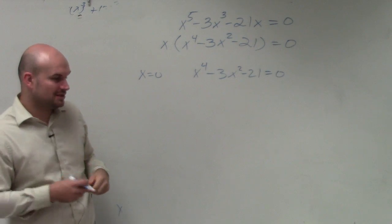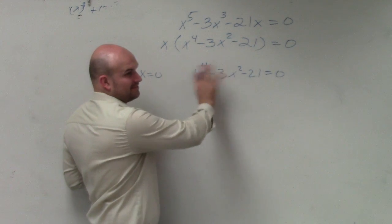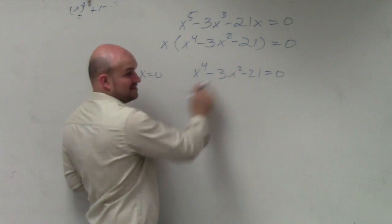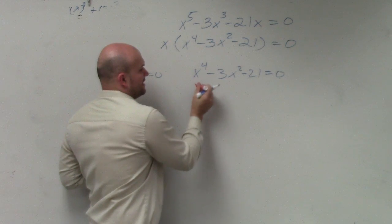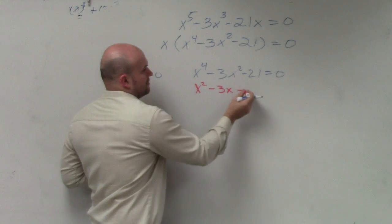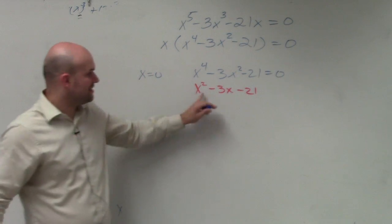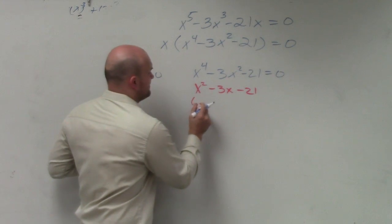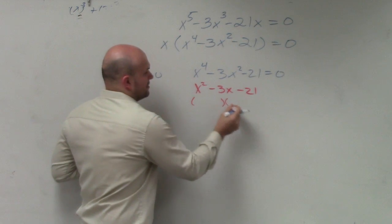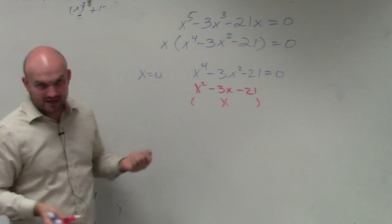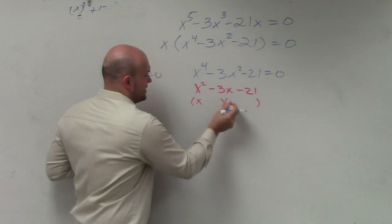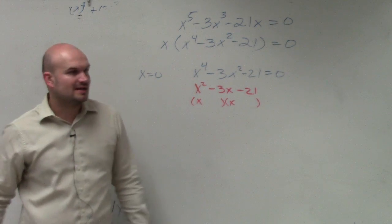The way that I like to look at these, forget about the power. Whenever you have something like in this format, think of it as a quadratic. Forget about everything else. If you had to factor this, we know the first two terms would have to multiply to give us x squared. So that's going to be x and x. And then what two numbers multiply to give you negative? Did I write that down wrong? I think I did.